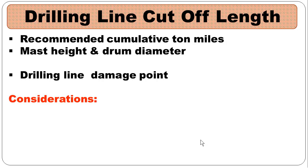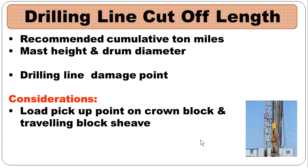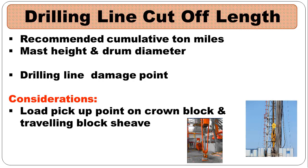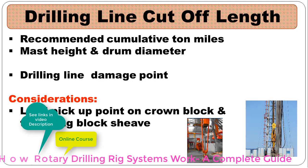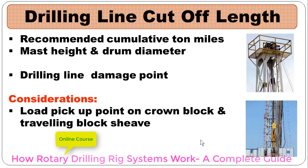We should consider two important points for the drilling line cutting operation. The first is the load pickup point on the crown block and traveling block sheave. When we latch the elevator around the string hanging inside the rotary table, pick up the string and take out the slips, the drilling line in contact with the traveling block sheave and crown block sheave will experience more stress, wear, tear, and crushing.